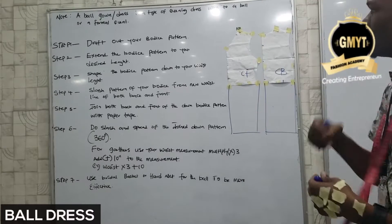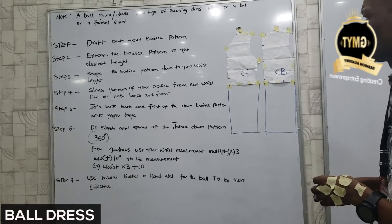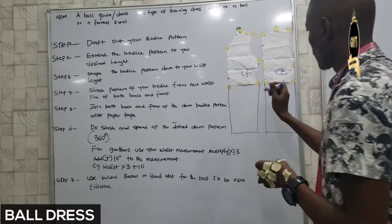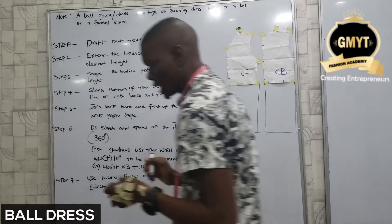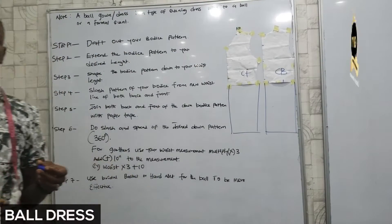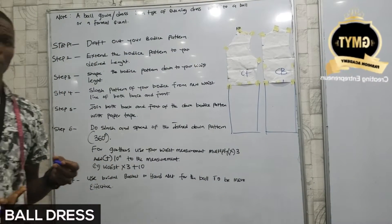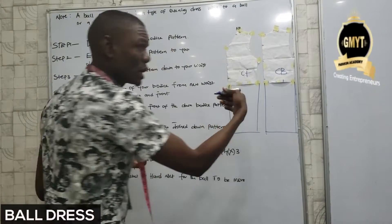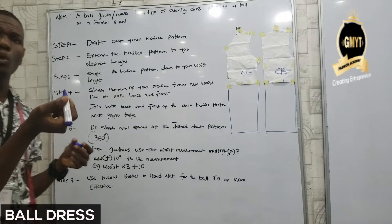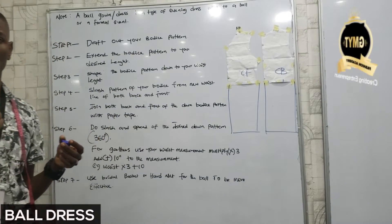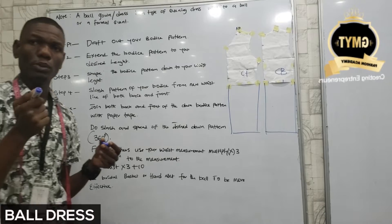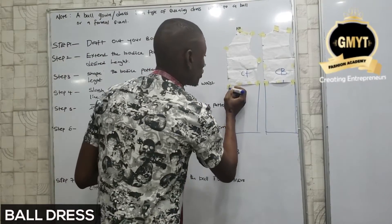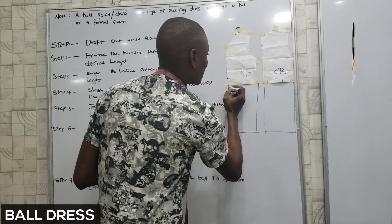Now step four — slash the pattern of your body from the new waistline, for both back and front. Don't forget your body has the new waistline and the natural waistline. Now the new waistline for those with a tummy — you are going down below 1cm. You can go 1.5cm, but please don't go more than 1.25cm. Even for pregnant women, don't go below 2.5cm. Once you go down for your new waistline, it looks like this.